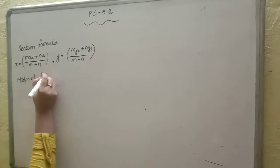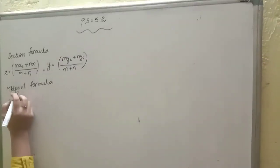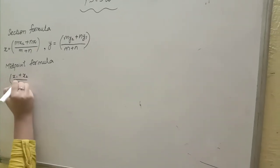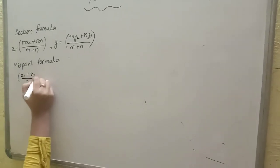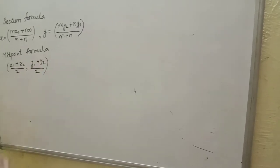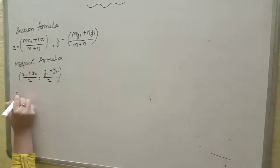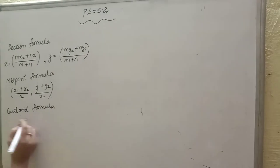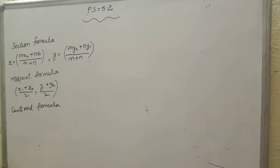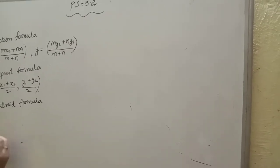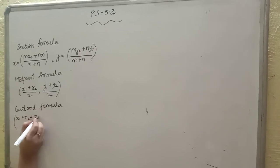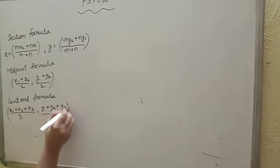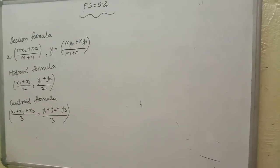The midpoint formula is: x = (x1 + x2) upon 2, and y = (y1 + y2) upon 2. The last one is the centroid formula. For a triangle where three vertices are given, the centroid formula is: x = (x1 + x2 + x3) upon 3, and y = (y1 + y2 + y3) upon 3. These are the three formulas we have to use in Practice Set 5.2.